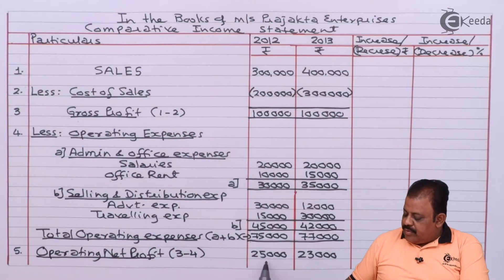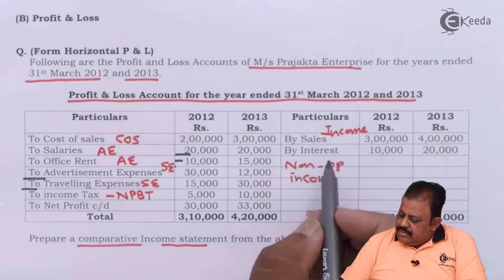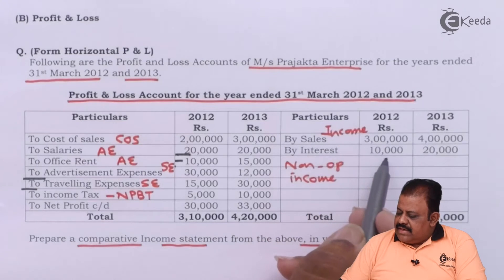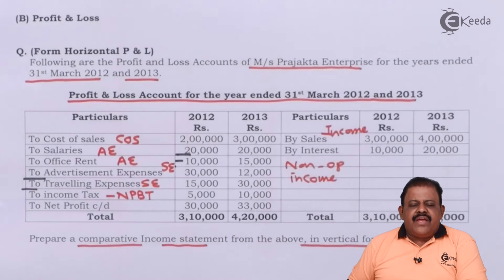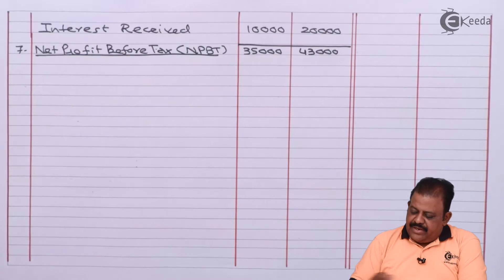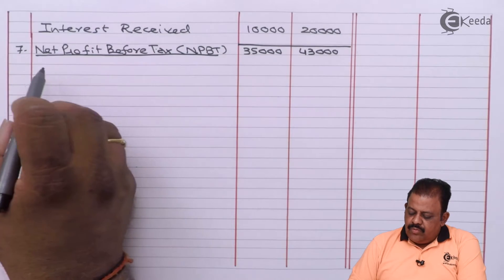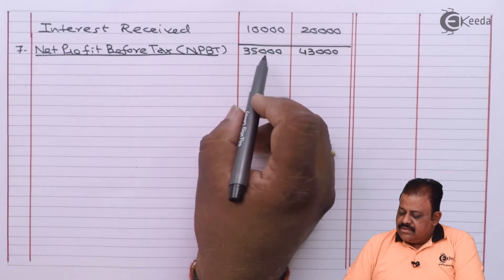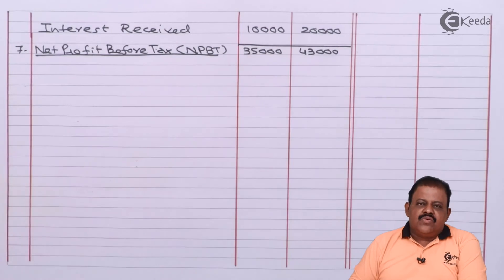Operating net profit is 25,000 and 23,000. To this we add non-operating income. Non-operating income is interest received: 10,000 and 20,000. Adding interest received to operating profit gives net profit before tax of 35,000 and 43,000.